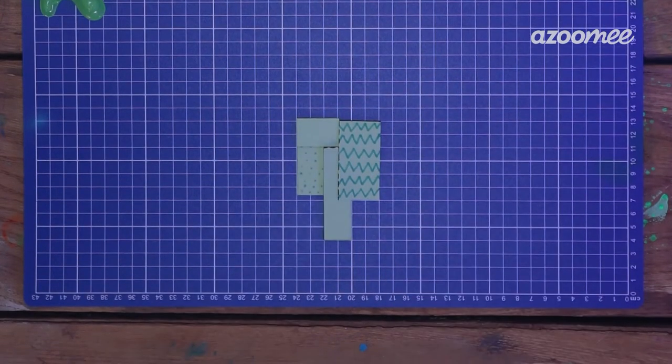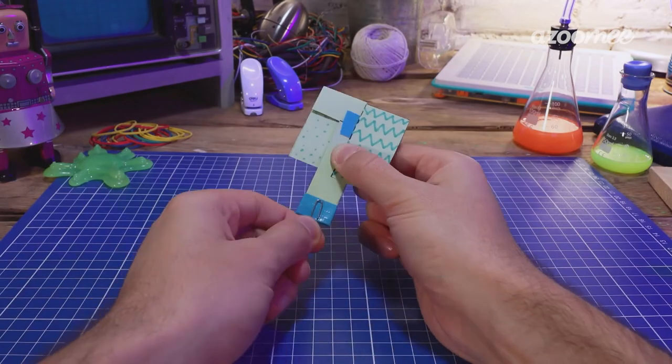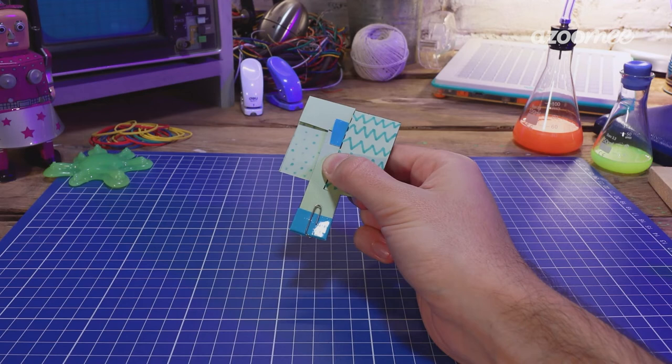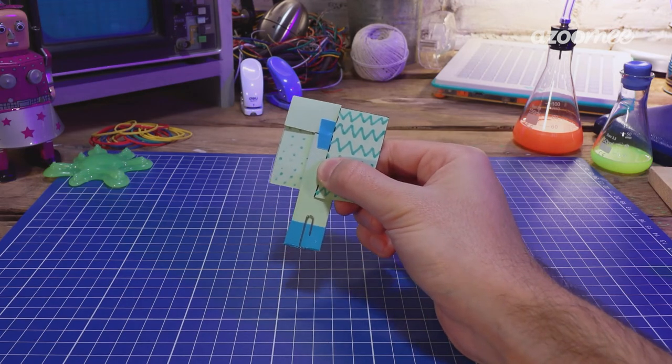Add some tape around the bottom to secure the base pieces and a little bit at the top. Now let's add on our weight. I'm using a paper clip. Experiment with different weights or no weights at all.